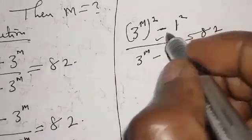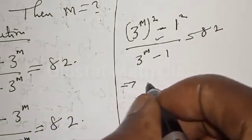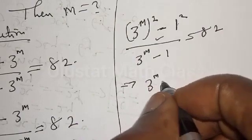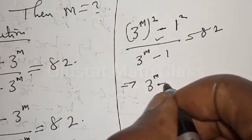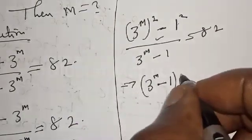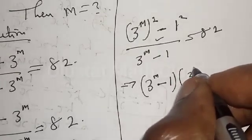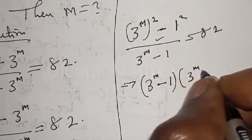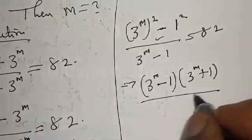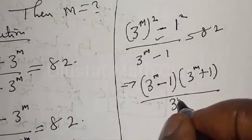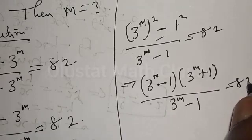Now the numerator is a difference of two squares. This implies we have 3 raised to power m minus 1, multiplied by 3 raised to power m plus 1, over 3 raised to power m minus 1, equal to 82.